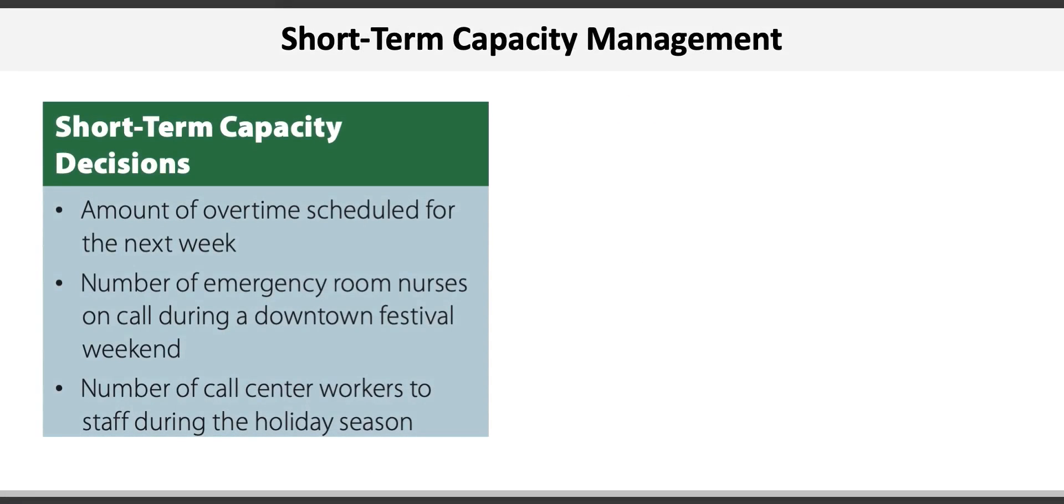Now on to short-term capacity management. Examples of short-term capacity decisions might include overtime scheduling, the number of ER nurses on call during a festival weekend, or the number of call center workers to staff during the holiday season.